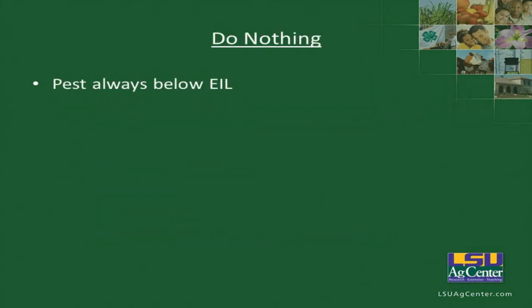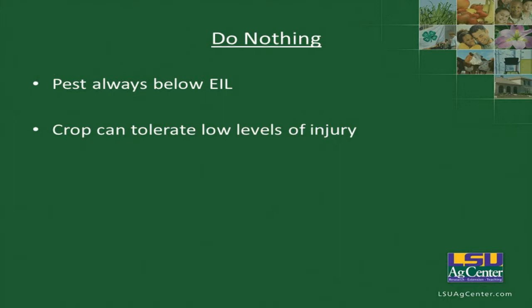When we do nothing, why? The pest might always be below the economic injury level — you may have a pest that never causes a problem. Your crop might be able to tolerate low levels of injury. Any control tactic you use might be too costly. For some high-value vegetable and fruit crops, very few products are available, or insecticides and other control tactics are very expensive and may not be cost effective. Remember, integrated pest management ties back to economic value, risk the grower feels, and economic value of your crop.